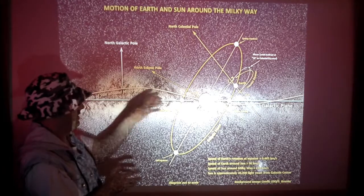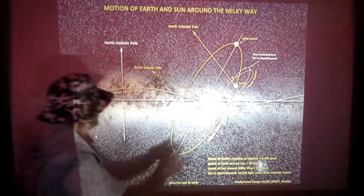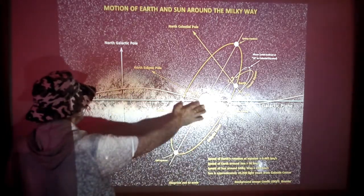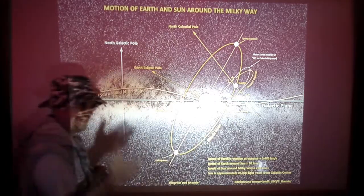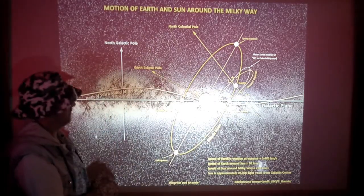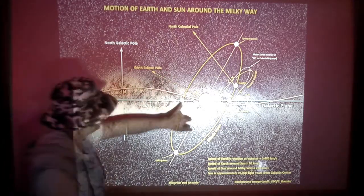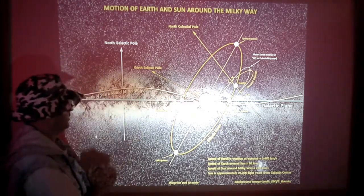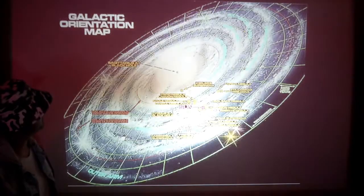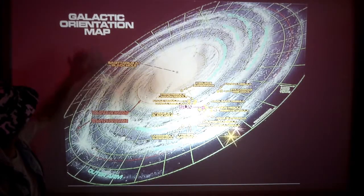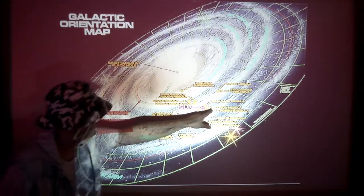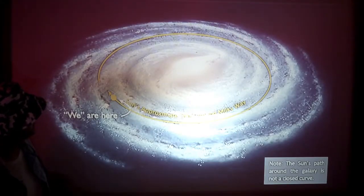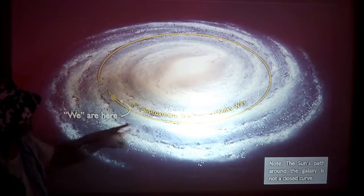This diagram is probably more correct with its angles and degrees, though it says 'not to scale.' There's a galaxy orientation map showing the Sun, the Orion Nebula, and other recognizable features - but the key point is the Sun's approximate 230 million year orbit around the Milky Way.